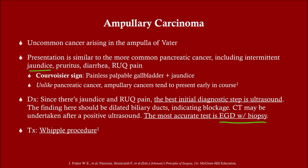With a tumor you don't have time to fibrose, so there's a lot more compliance of the gallbladder and that's going to lead to a big dilation — it could even be palpable. So if you have a painless palpable gallbladder in the setting of jaundice, that's called Courvoisier's sign, and that means you have a cancer somewhere — most likely a tumor.